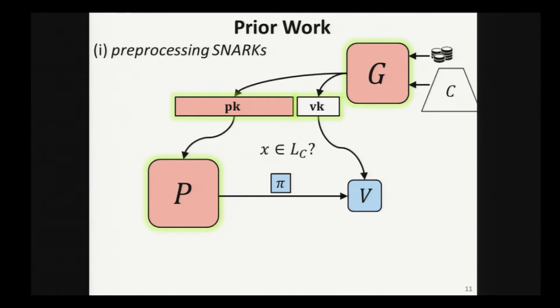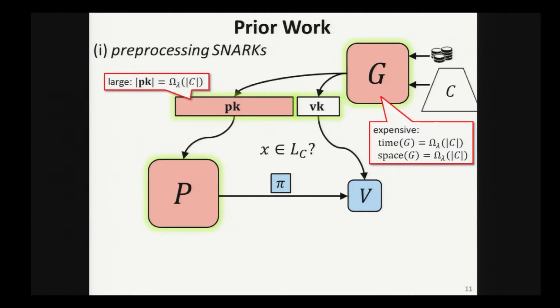Specifically, the generator has to take as an input an explicit circuit. Think about it as a size order of T for checking the transcript of computation. And the generator pays in time and space that is linear in C to produce, this time, two public parameters. A long one, linear in C, for the prover, that's a proving key, and a short one, a verification key for the verifier. And the prover is going to use this long proving key to produce the proof, and he is also not space efficient, because his space complexity will grow linearly with C, which is at least T.